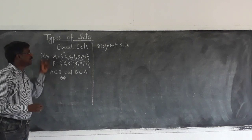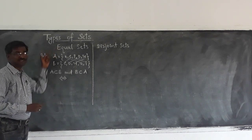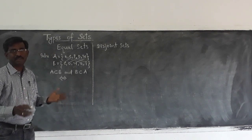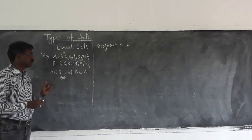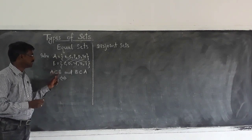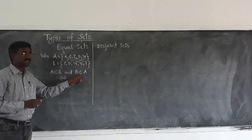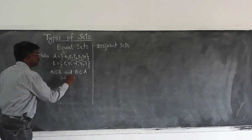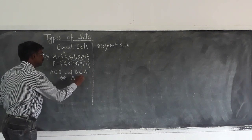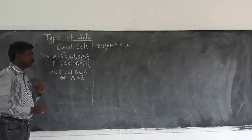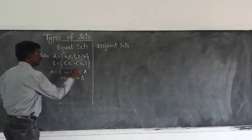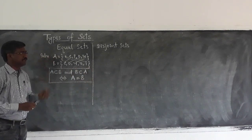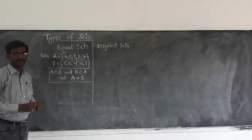Equal sets means sets having the same elements, under the condition that A is a subset of B and B is a subset of A. So finally we write this concept as A equal to B. This is the concept of equal sets.